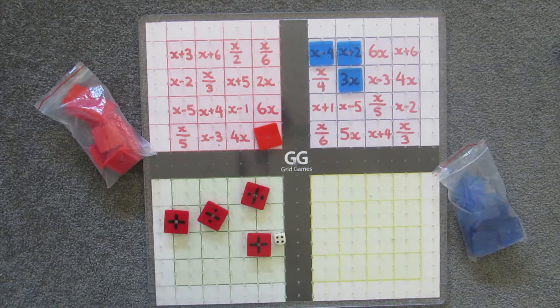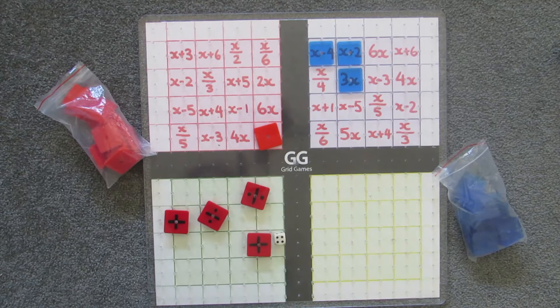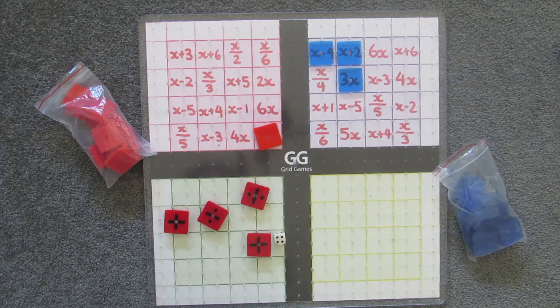And so that's how you play the game. Undoing what is there in the algebraic expression to leave you with x. And the first person to either get four in a row or fill the grid wins.